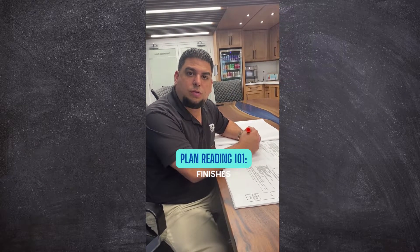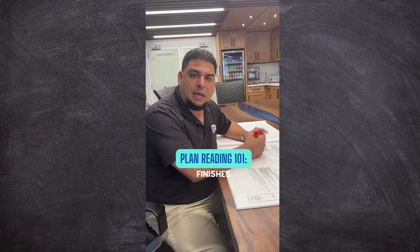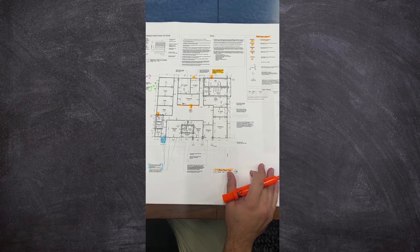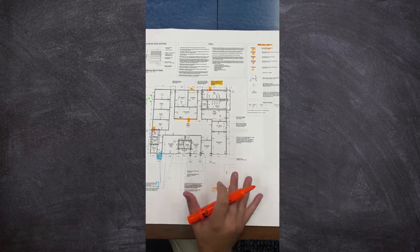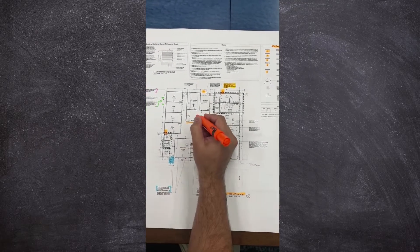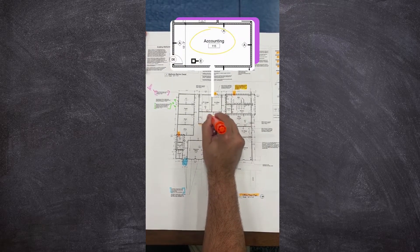This includes flooring, painting, ceiling, and all types of finishes that are going to go into your office space. For this episode, we're going to focus on a few of the rooms. Let's take the accounting room 115.